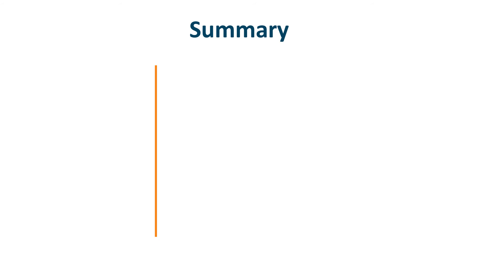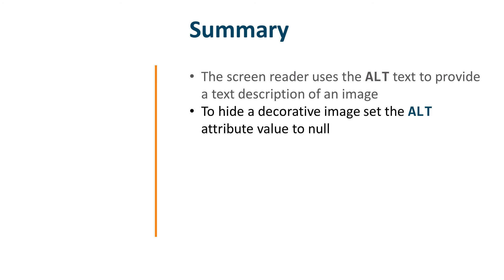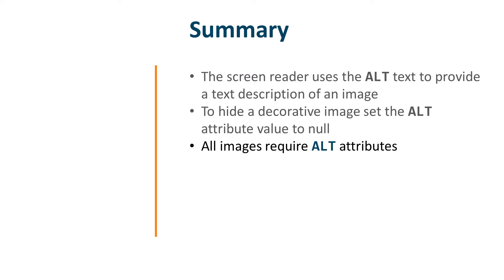In this lecture I explained how a vision impaired user relies upon the alt text of images to understand what the image depicts. The screen reader uses this alt text to provide a text description of an image which is announced by the screen reader. If an image is decorative and can be ignored by the user, the alt attribute value can be set to null. In both cases, all images require an alt attribute, but only some images require alt text.